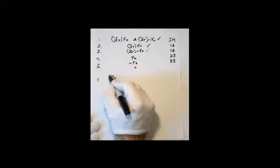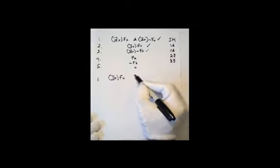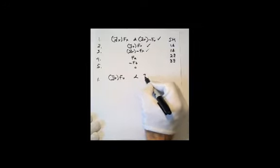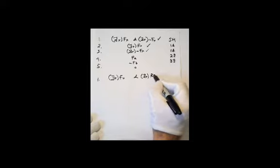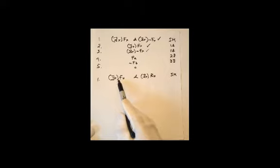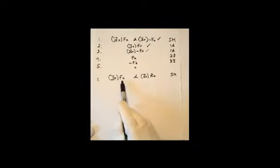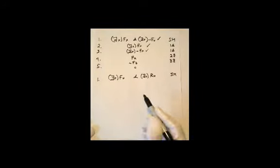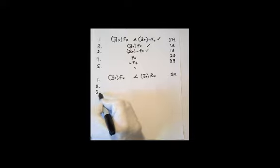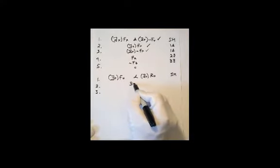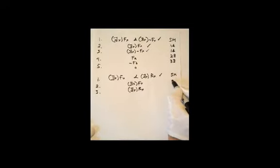Suppose we start a different tree with: there is an x F(x) and there is an x R(x). If F(x) means 'x is friendly' and R(x) means 'x is republican,' this says someone is friendly and someone is republican. When we decompose the sentence in line one, we again have a conjunction, so we write down: there is an x F(x) and there is an x R(x), coming from line one by conjunction decomposition.